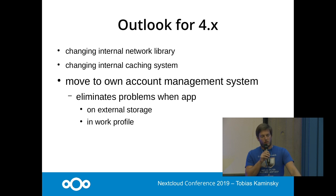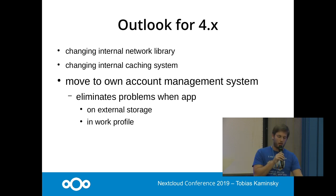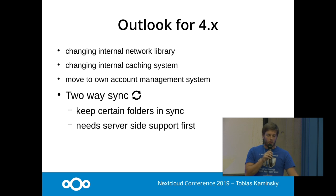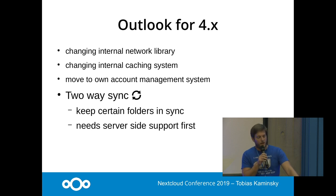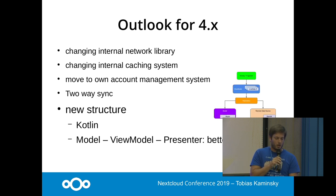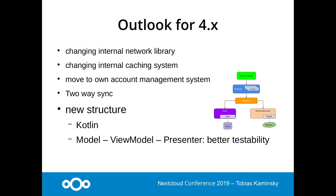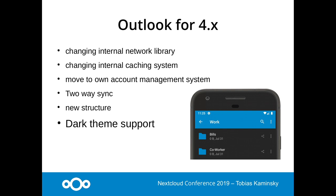We want to move away from the Google Account Manager system because it causes problems with external storage and work profiles. A long-wished feature is two-way sync — to have a certain folder totally in sync — but this requires server-side support first. We also want to restructure using Kotlin and a new model system for better testability, and last but not least, the often-requested dark theme support.